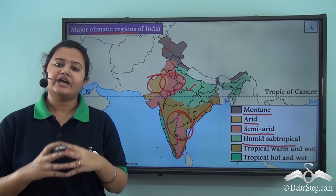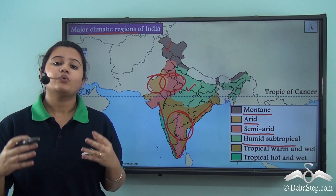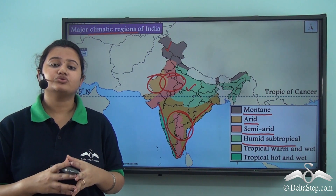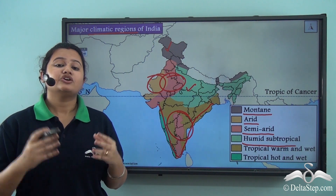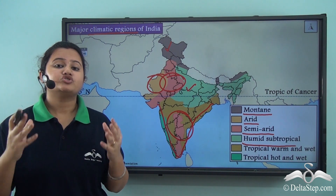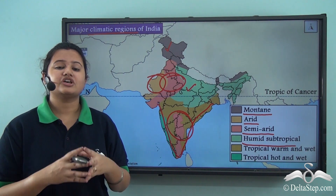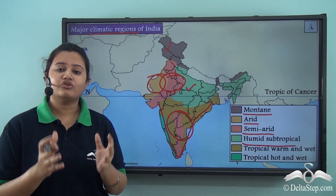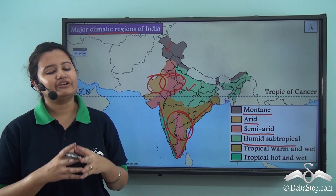This brings us to the end of today's discussion on Indian climate. In this lesson, we understood that India enjoys tropical monsoon climate owing to its location — because the Tropic of Cancer passes through its middle. There are also significant regional variations, making the climate of India quite diverse. In our next lesson, we shall focus on the factors that determine this diverse climate of India.